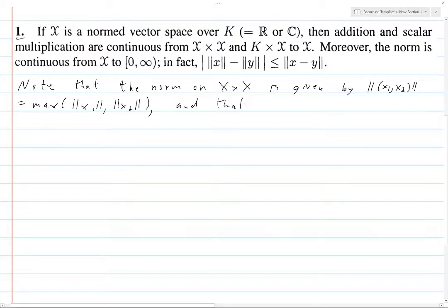And the one on K cross X is given by, let's say we have a lambda and an x, we set it to the max of these two.